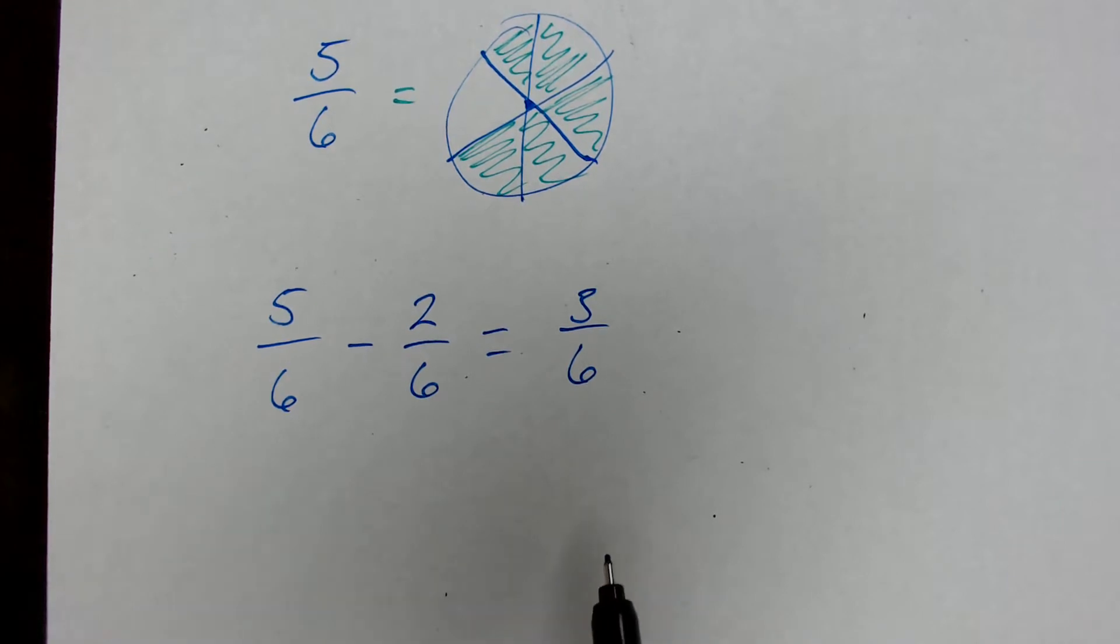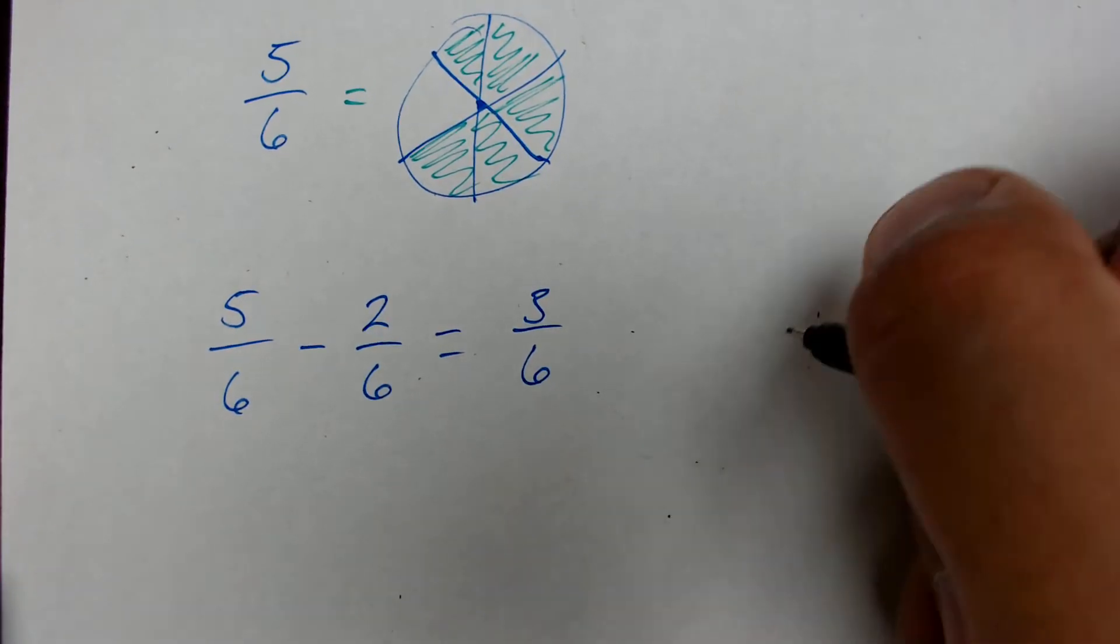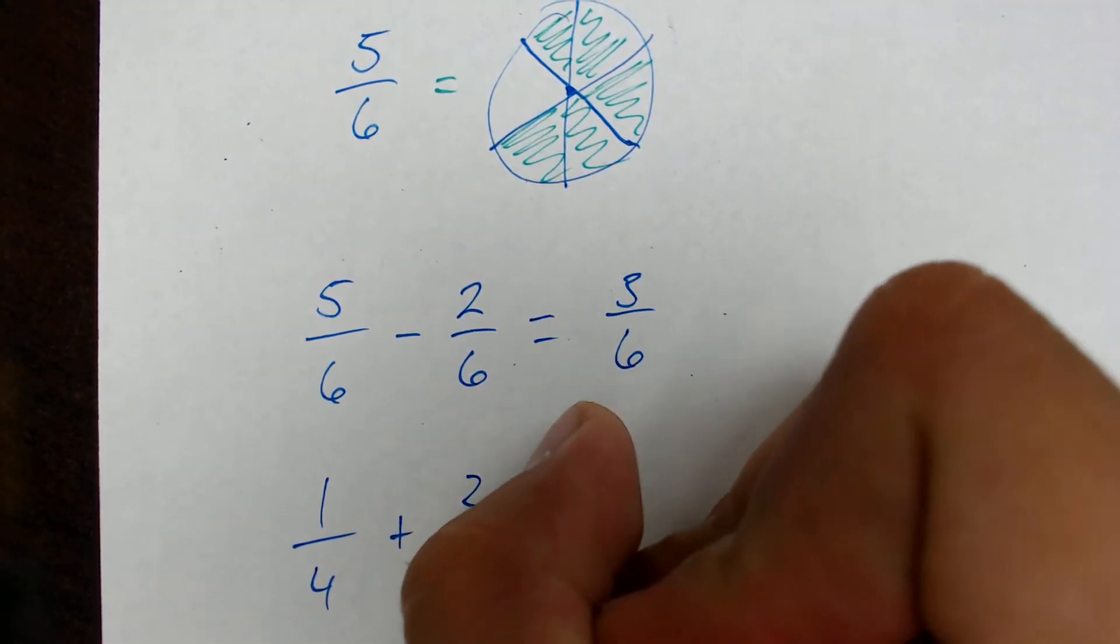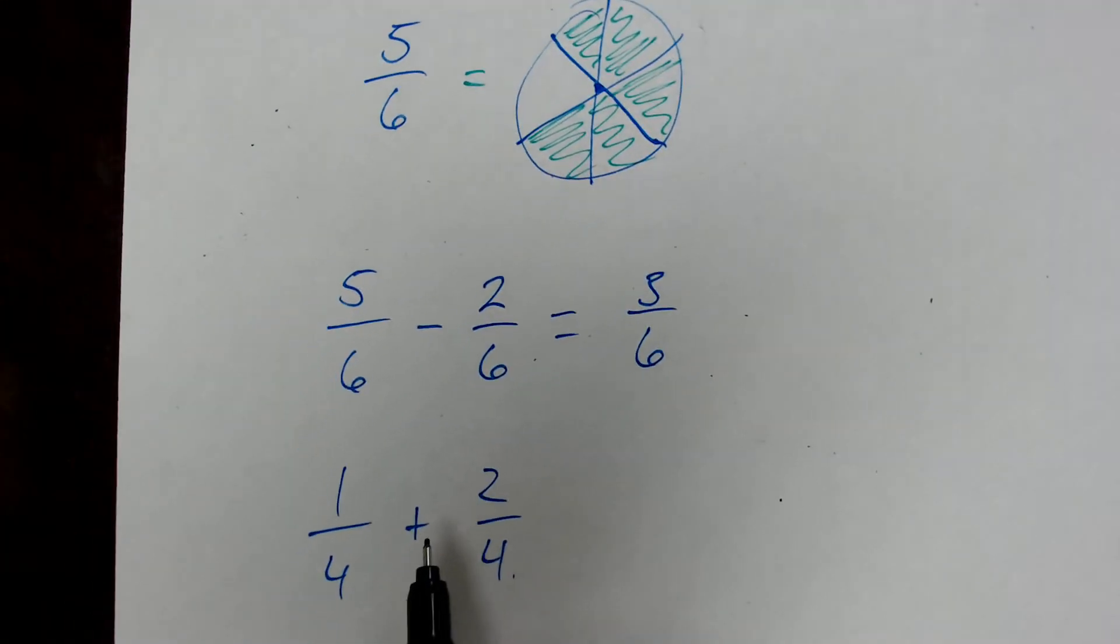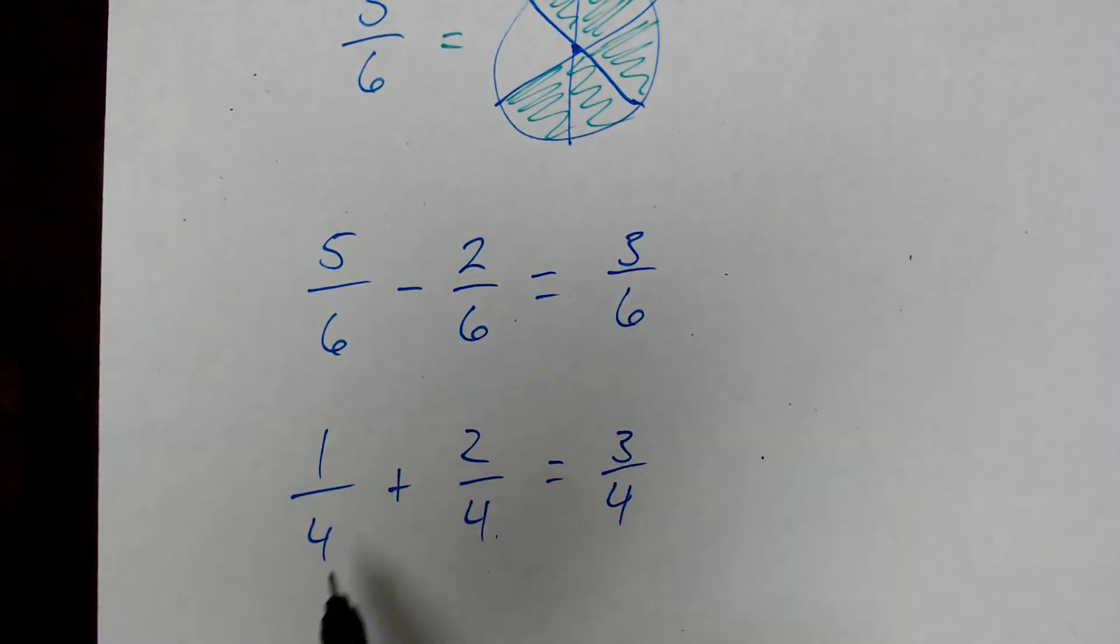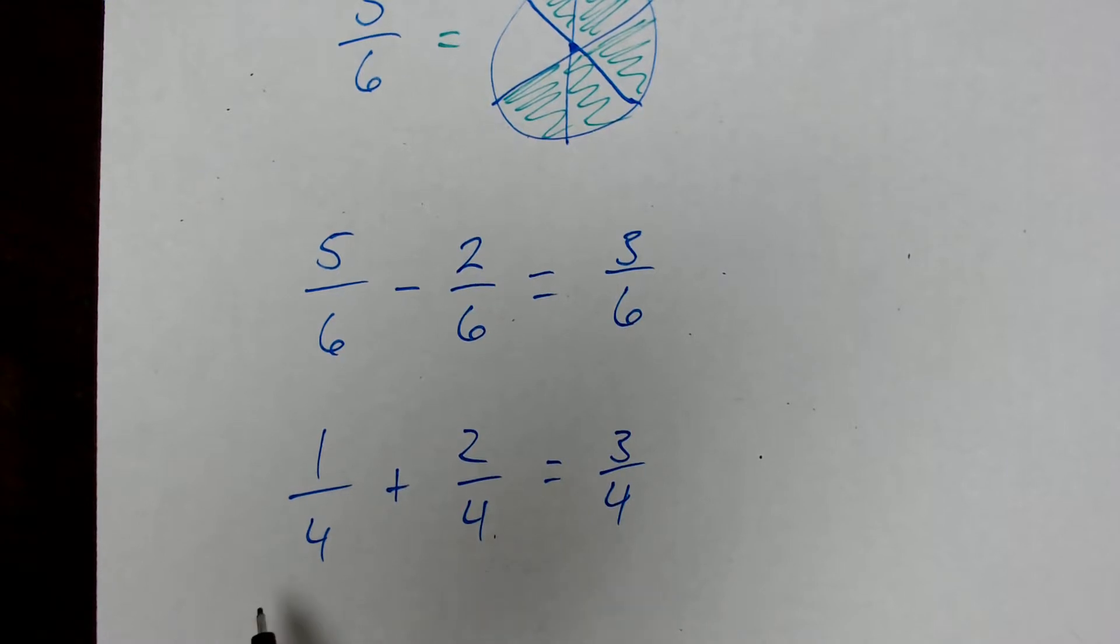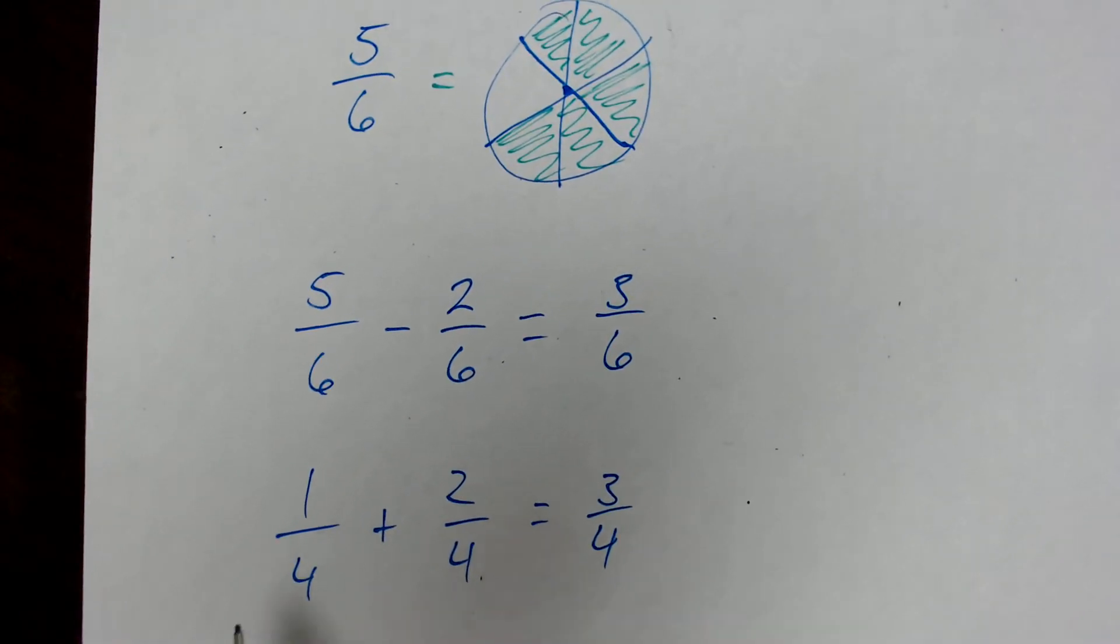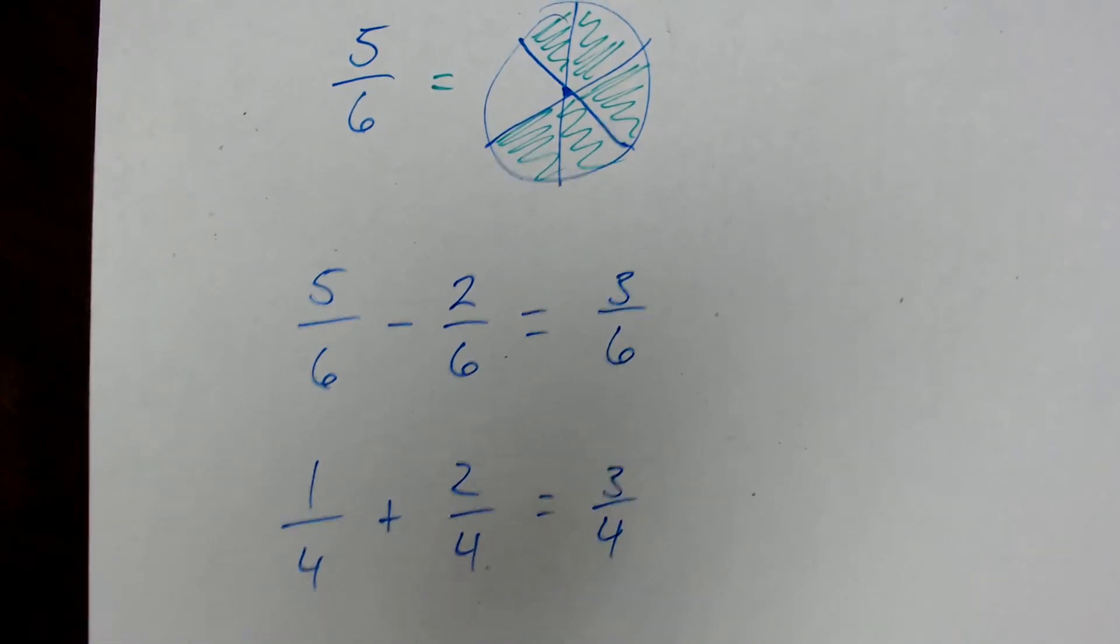And likewise, let's say we had an addition problem. Let's say we were adding one-fourth plus two-fourths, right? The one plus two would give us three-fourths, and the fours would not change. We don't say four plus four equals eight. We just keep four the same because, remember, the bottom number is telling us how many or what size group we have. The group is one-fourth of a whole, right? Or there's four groups to deal with. And then the top number tells us how many of those fourths or size groups we have. All right.